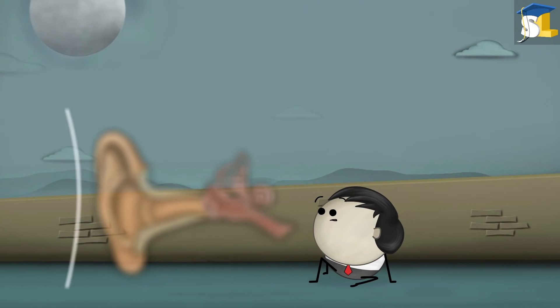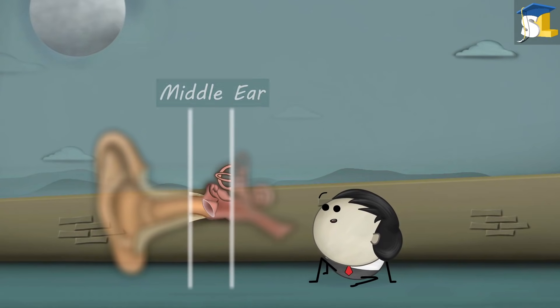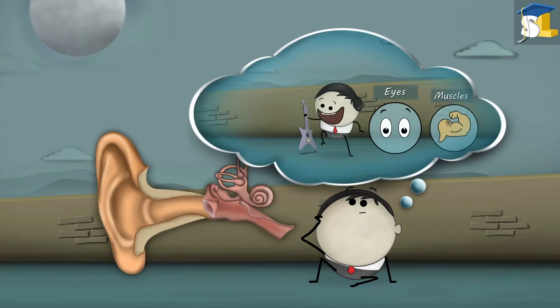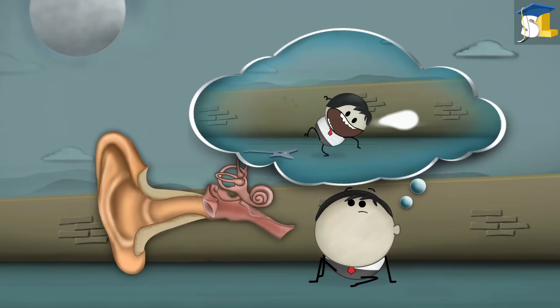Our ear consists of three parts: outer ear, middle ear, and inner ear. Our inner ear works in sync with our eyes and muscles, helping us maintain balance while we are doing various activities.